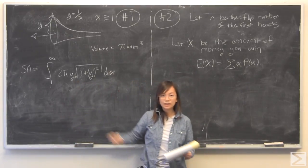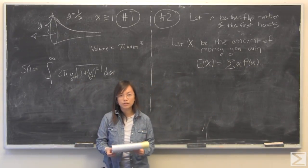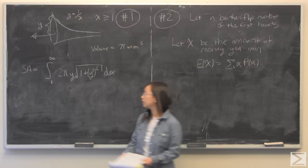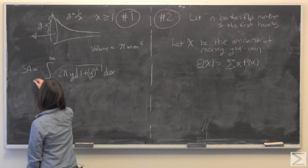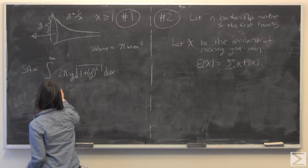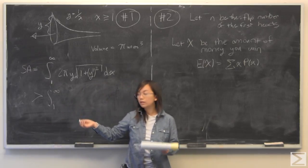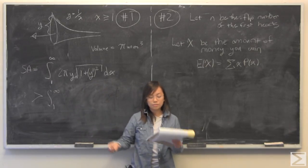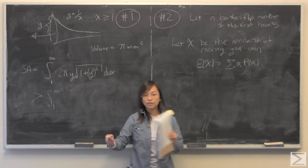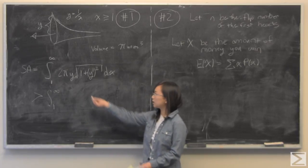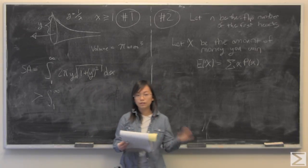Okay so I plug that in and now I'm going to make an argument that is going to make sense later. I'm going to say that this value is going to be greater than the integral from one to infinity of two pi y dx.